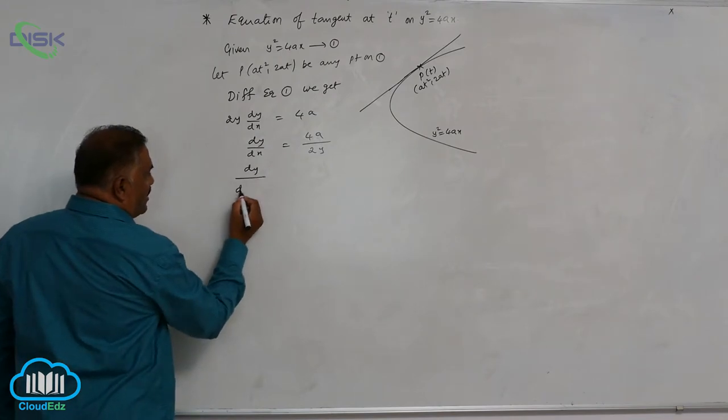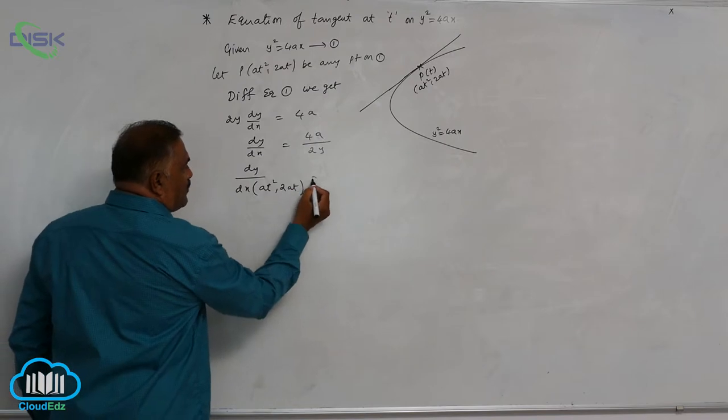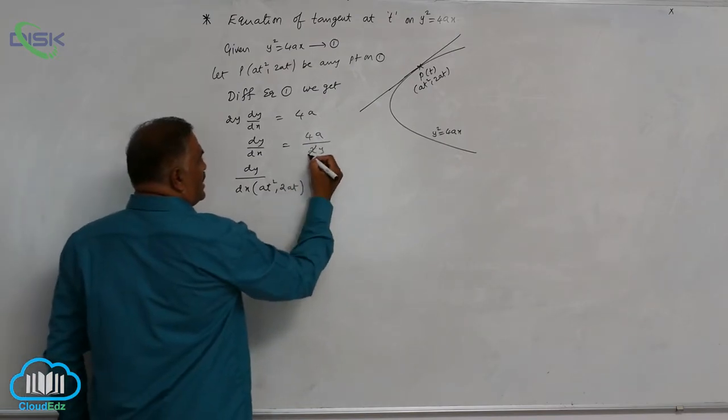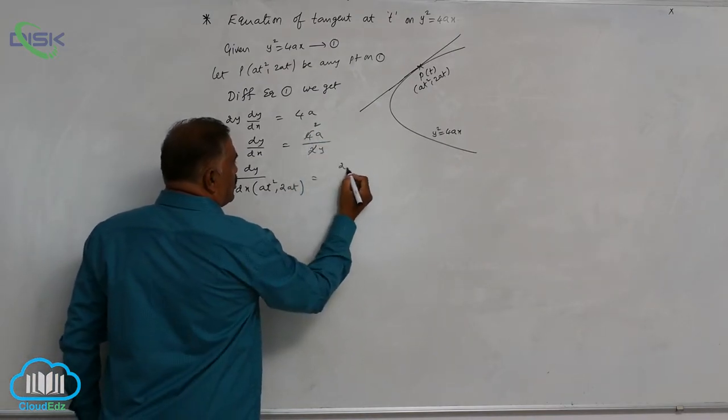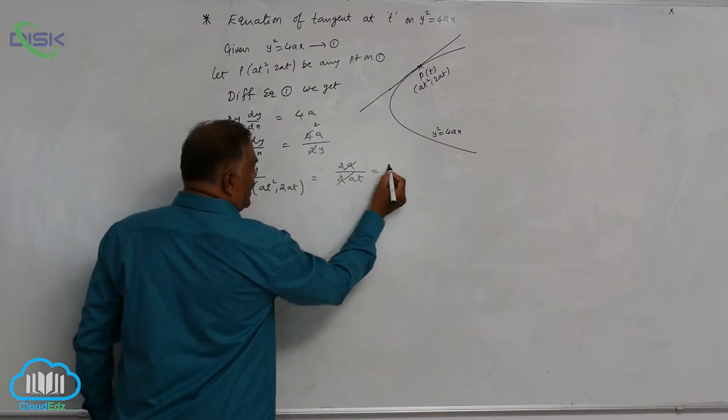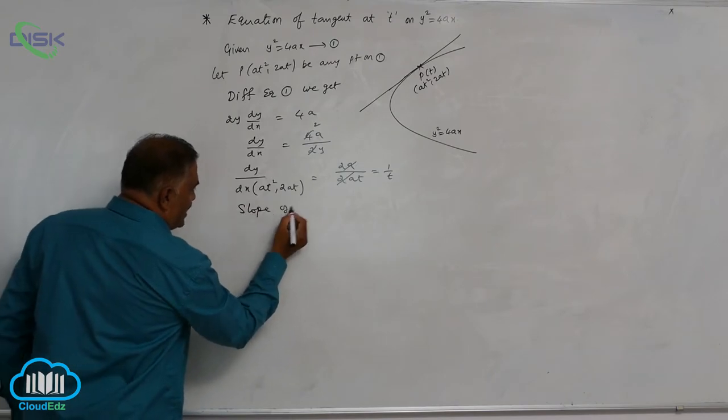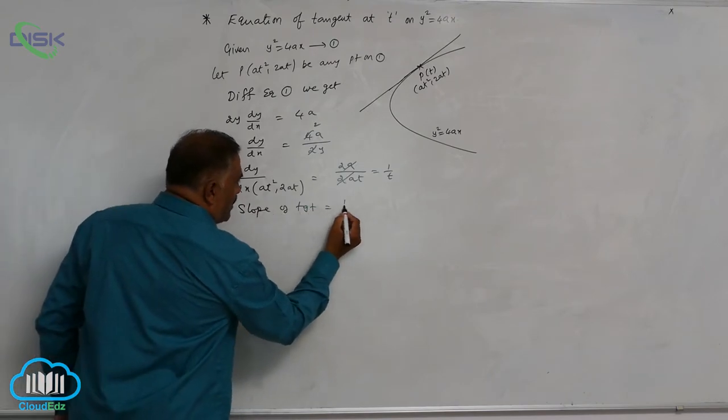Dy by dx at the point at square comma 2at. Before this, you can simplify, this is 2 times. So 2a by y, that's 2a by 2at, gets cancelled leaving 1 by t. So slope of tangent is equal to 1 by t.